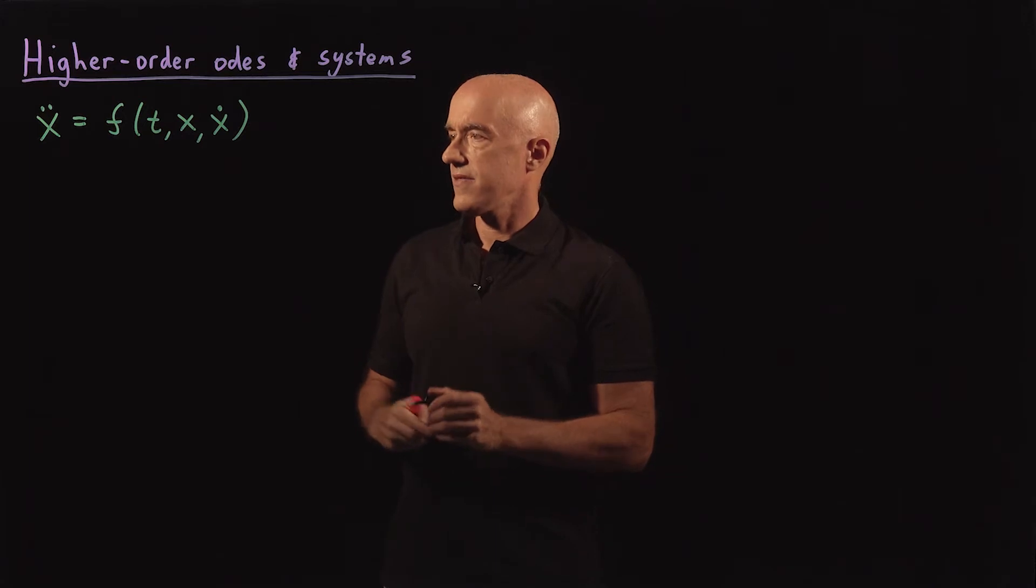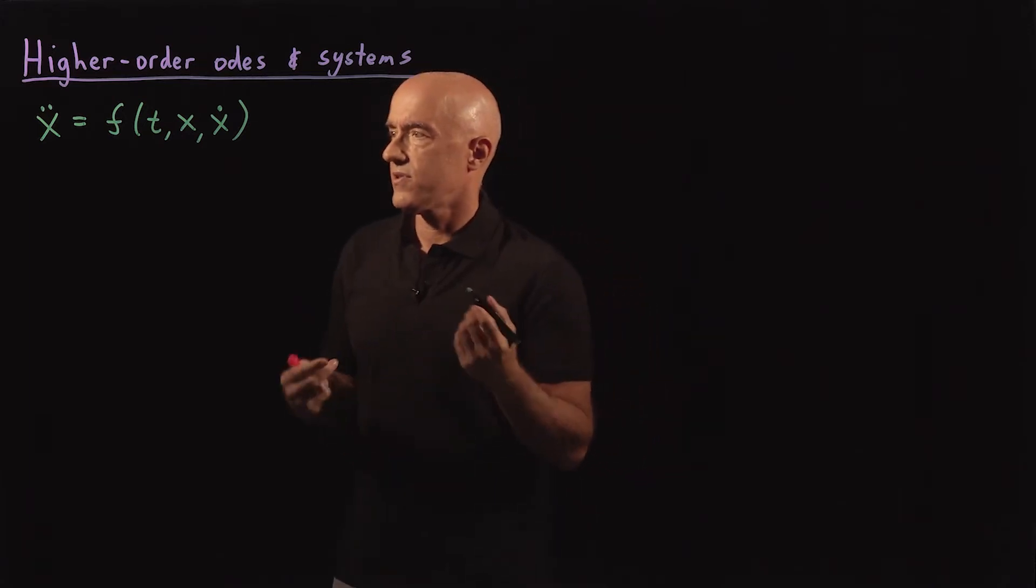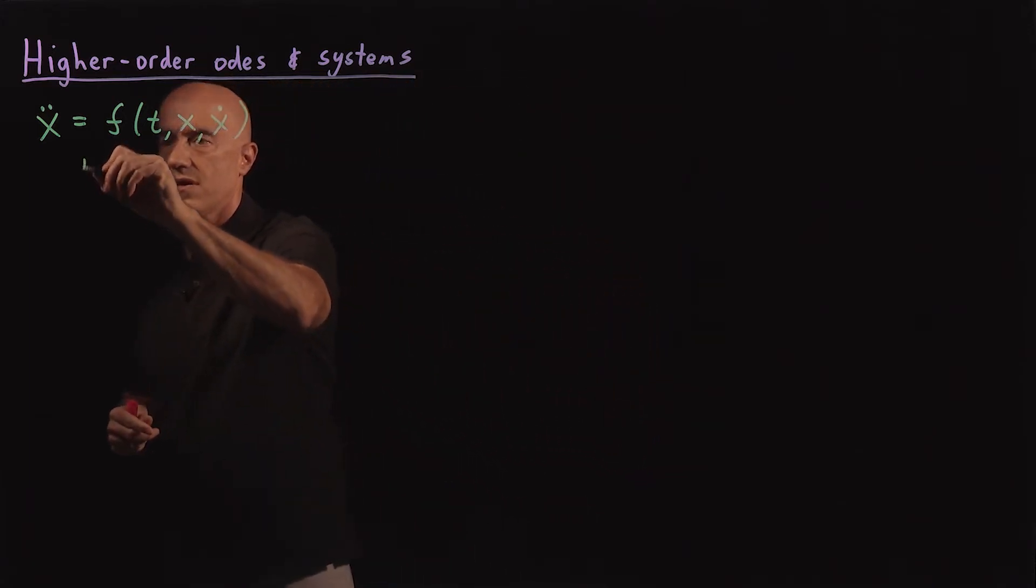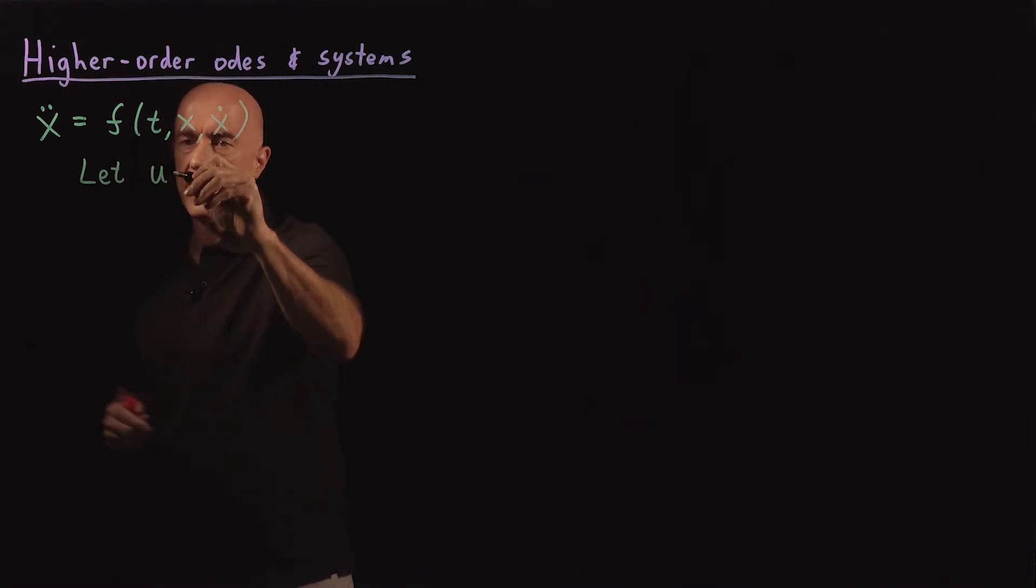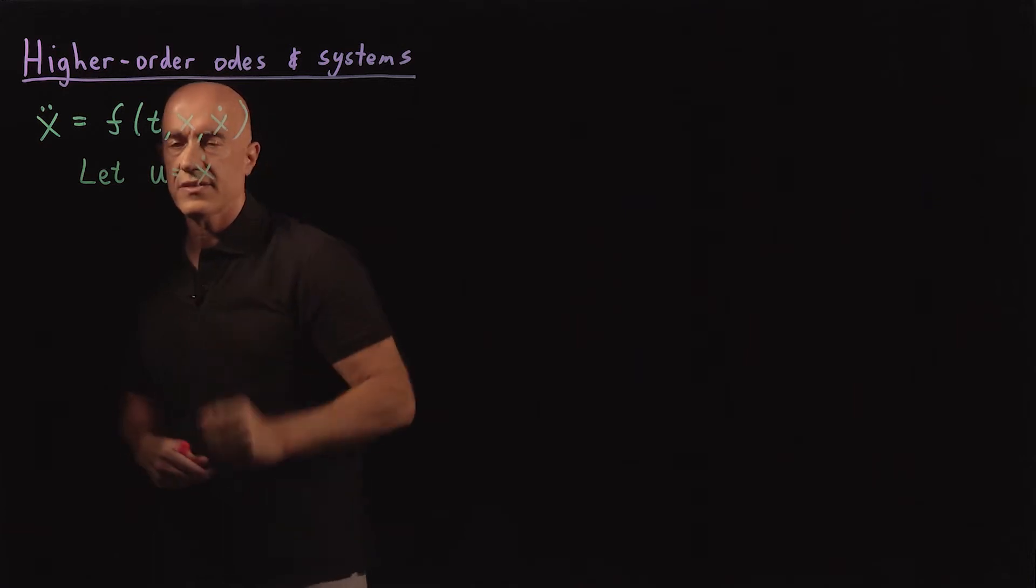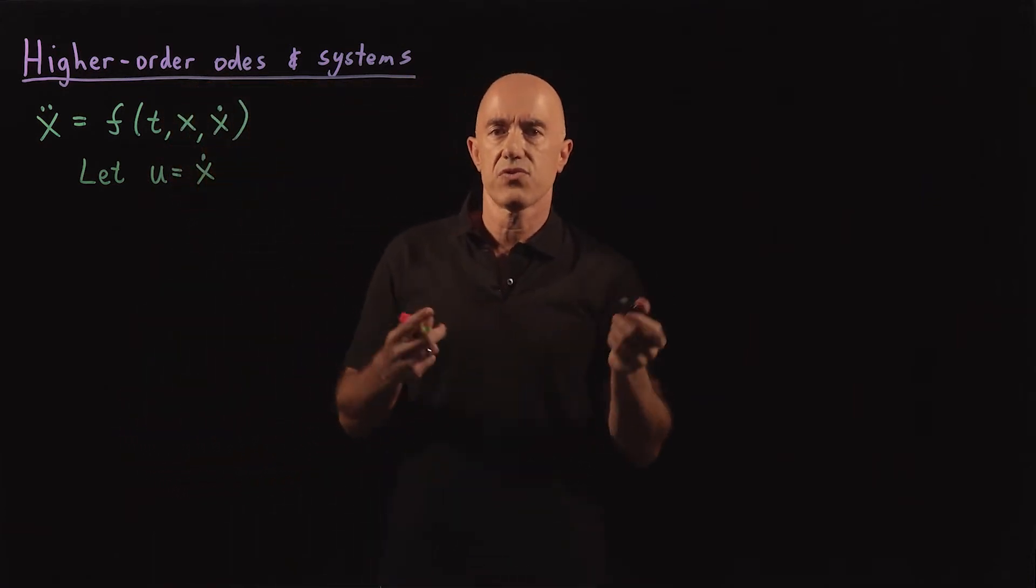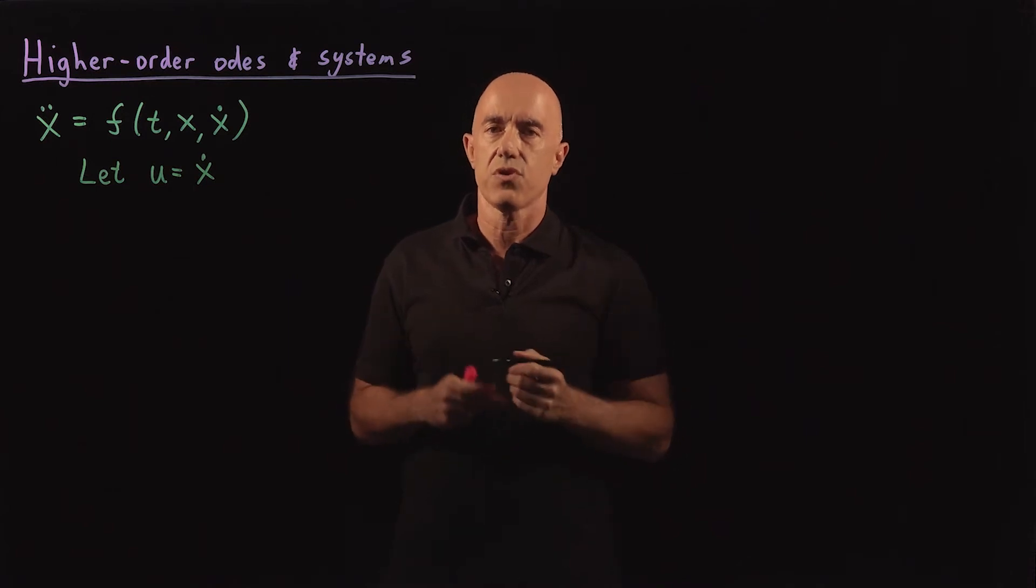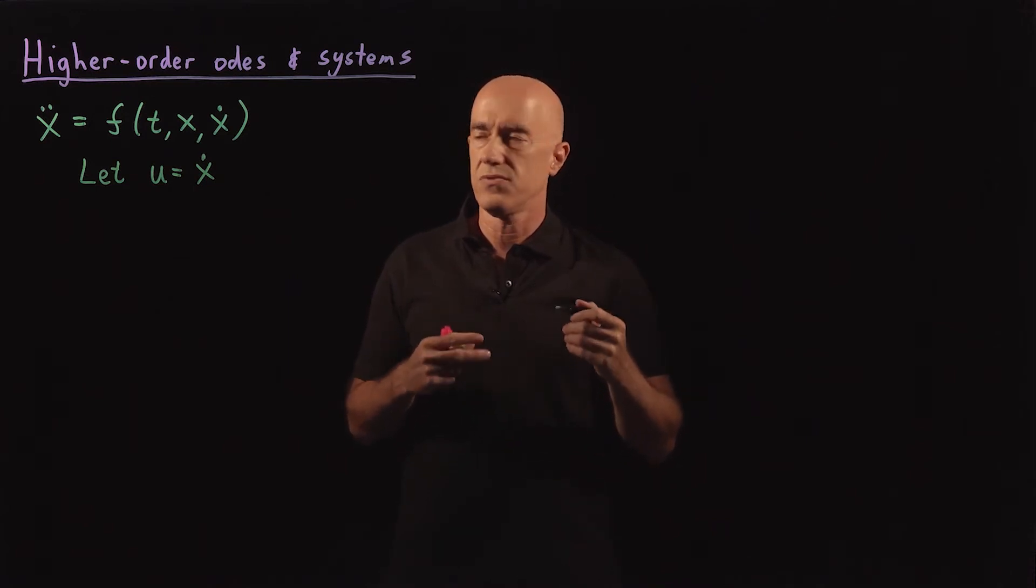The trick here is to define a new variable. We let some new variable u, like velocity, equal dx dt, x dot. And then to construct a system of first-order equations using this new variable.